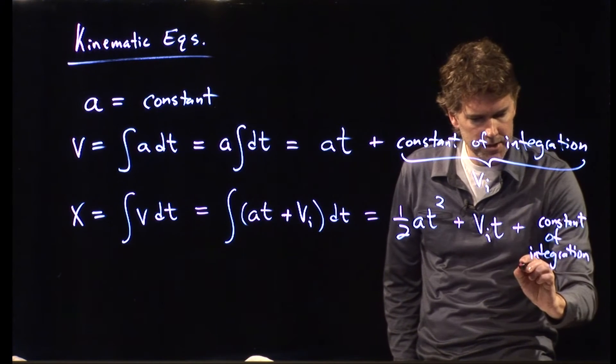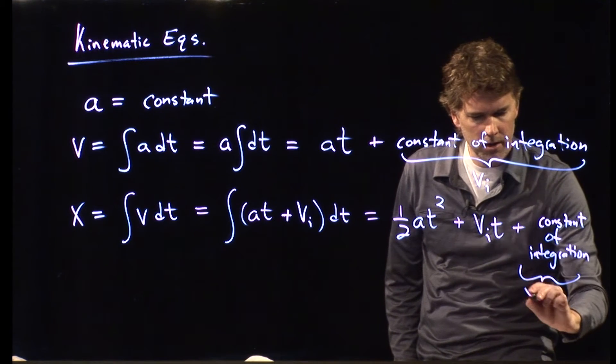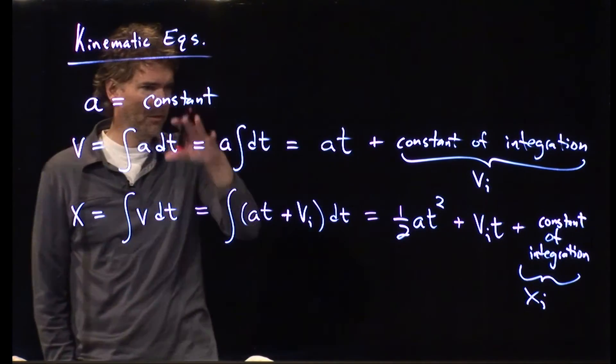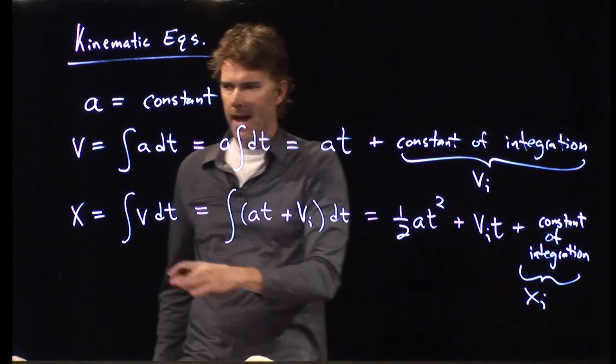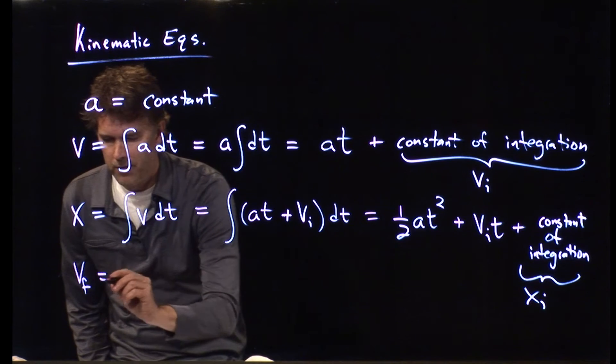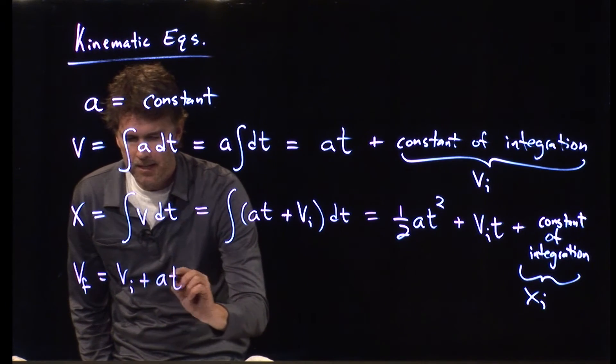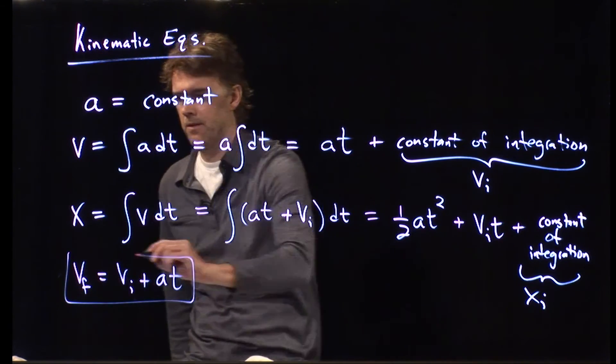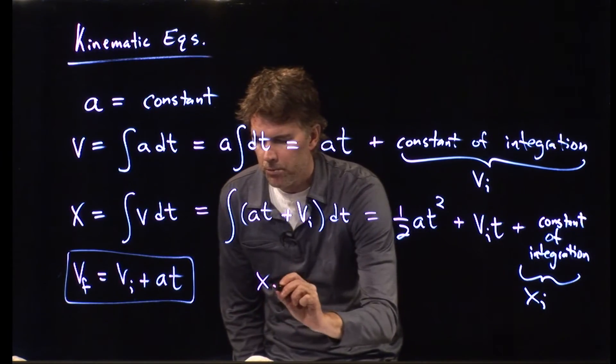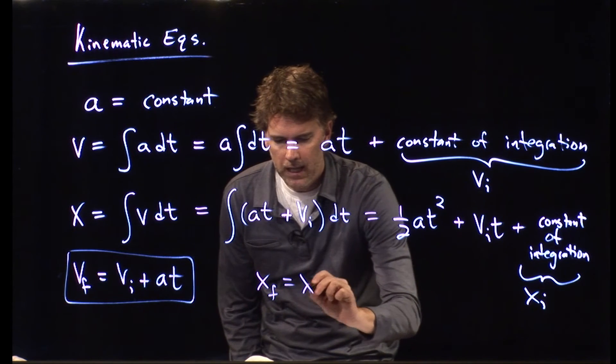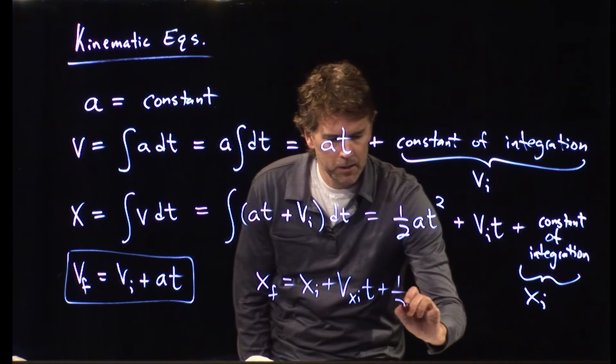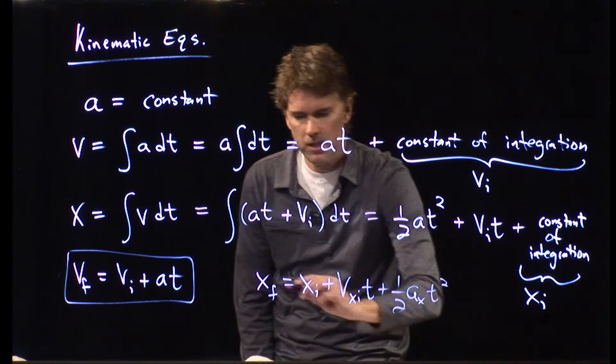And that constant of integration we are now going to call x sub i. And so look what happens. This is how the kinematic equations develop. We have this equation for v t which becomes the following: Vf equals v i plus a times t. And we have this last equation for x which becomes xf equals xi plus v xi times t plus one half a sub x t squared.